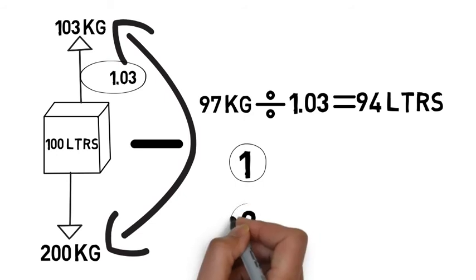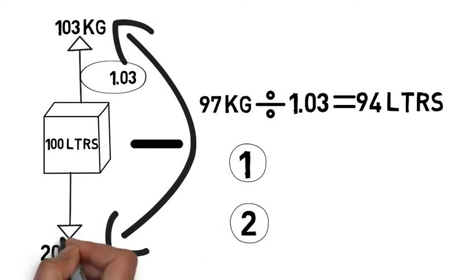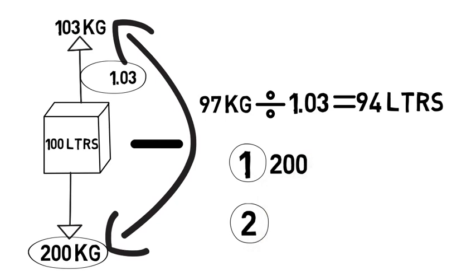For the first part of step one, we're just going to focus on the weight of the object. It weighs 200 kilograms. We're going to enter 200 next to the number one there, and now we need to divide that by the salt water constant because it's in salt water. So weight divided by the water constant.